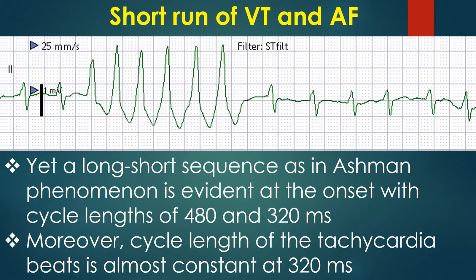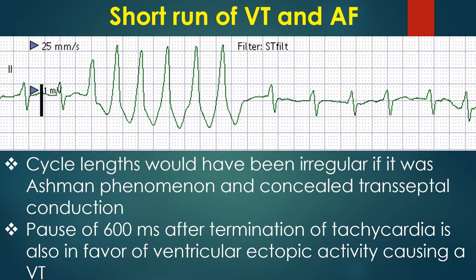Yet a long-short sequence as in Ashman phenomenon is evident at the onset with cycle lengths of 480 and 320 ms. Moreover, the cycle length of the tachycardia beats is almost constant at 320 ms. Cycle lengths would have been irregular if it was Ashman phenomenon and concealed transeptal conduction. The pause of 600 ms after termination of the tachycardia is also in favour of ventricular ectopic activity causing a ventricular tachycardia.